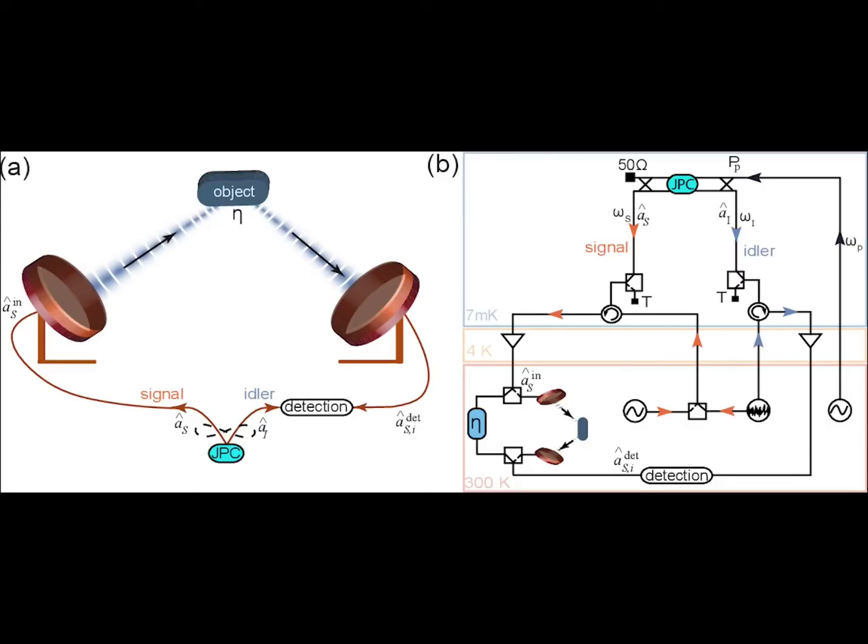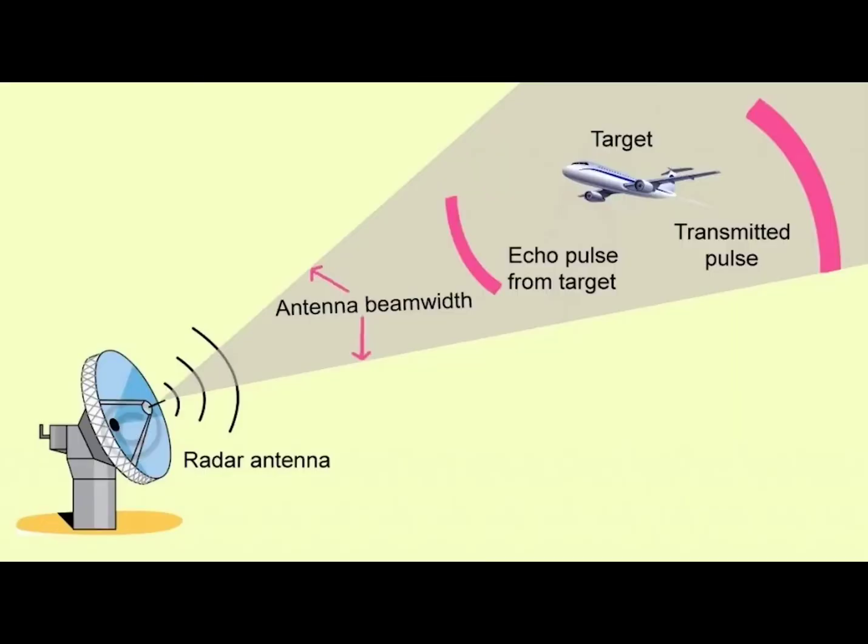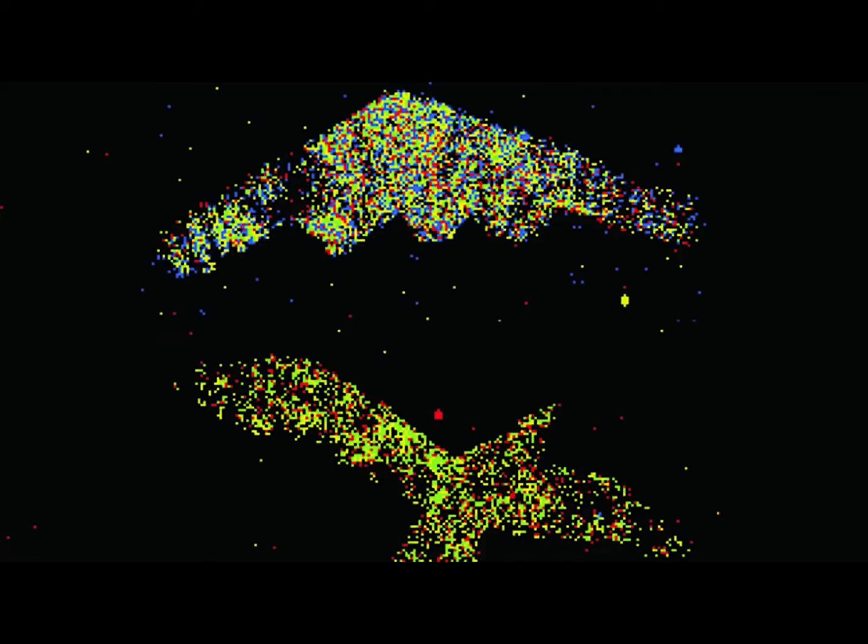When the A photons we emit hit an object in the air, they interact with the object. When photon A interacts with the object it hits, the sister photon B we have hidden begins to show an interaction. In other words, when photon A hits something in the air, photon B responds similarly, without the photons needing to be reflected back to the radar antenna. We can tell by looking at photon B that photon A has hit something.